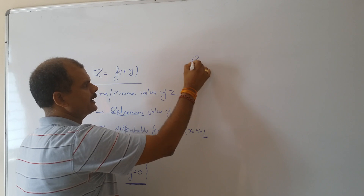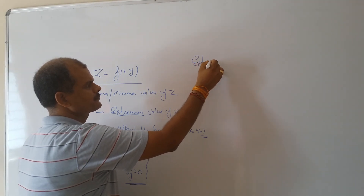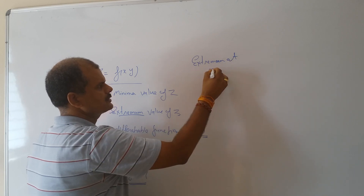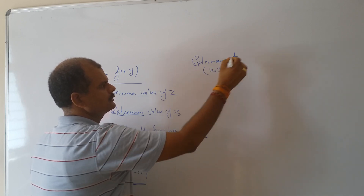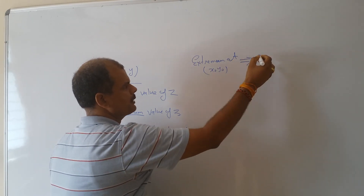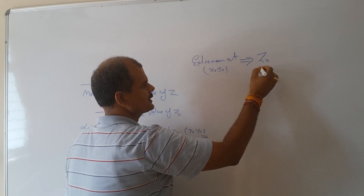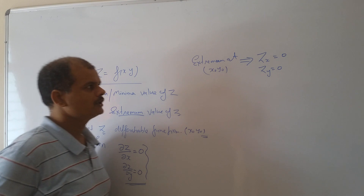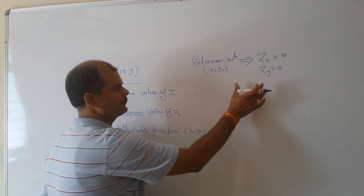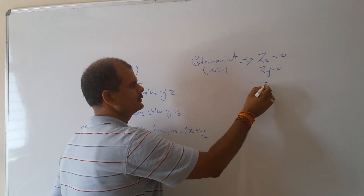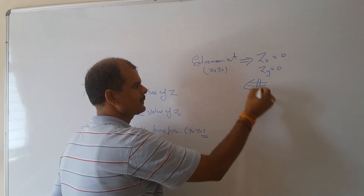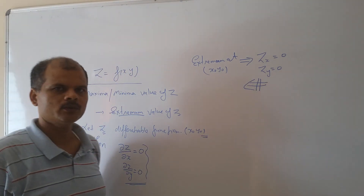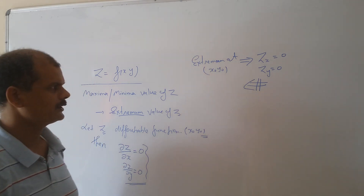So we get extrema at (x₀, y₀), implying partial derivatives zx and zy will be 0. Now, the converse is not true — we can have partial derivatives equal to 0 but that point won't necessarily be an extrema point.